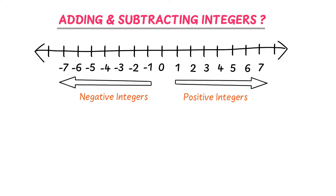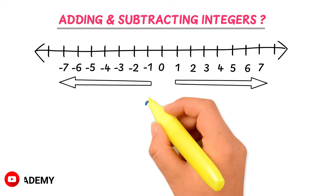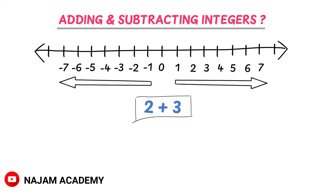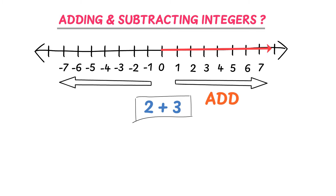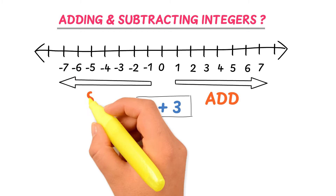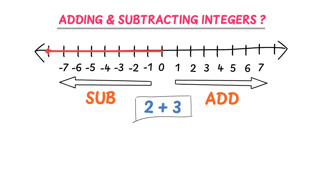It is a very simple method. Remember that if you need to add an integer, travel or move towards the right using the number line. Secondly, if you need to subtract an integer, travel or move towards the left using the number line.